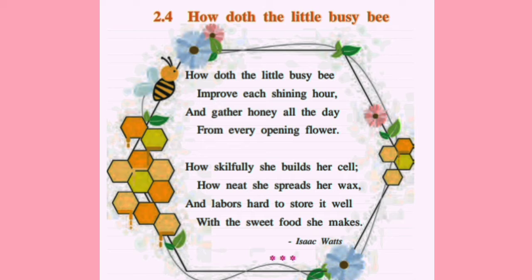Now 'doth' basically means 'does' — how does the little busy bee. The word 'bee' is described with the adjective 'busy.' Why busy? Because the bee keeps working harder and harder, it never stops, it never feels lazy. That is why they have used the word 'busy' — because the bee never rests and is always working to make its honeycomb.